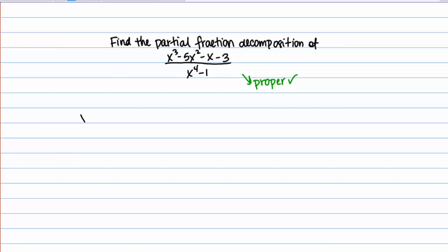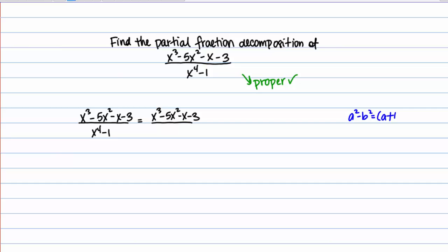The first thing we want to do is check to see if the top can be factored, and then we also want to factor the denominator. On the top I have x cubed minus 5x squared minus x minus 3. You can try to factor that — it does not factor in this case. So our next step is to look at factoring the denominator. The denominator is a special form, hopefully you recognize, called the difference of squares. The difference of squares has the form a squared minus b squared, and it factors into a plus b times a minus b. So in my case I have x to the fourth minus 1, which is going to factor into x squared plus 1 times x squared minus 1.